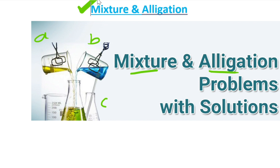So mixture is the combination of two or more elements; combining them forms a third element, which we call C. Now, what is allegation? Allegation is a rule that enables us to calculate the price of a mixture. When we combine quantities A and B to form element C, we use the allegation method to easily calculate the price or quantity of the resulting mixture.